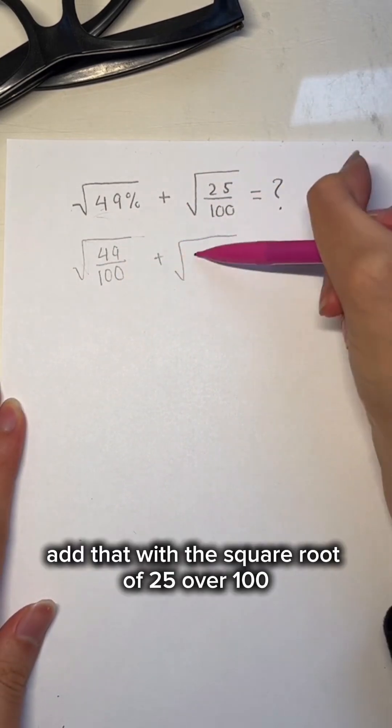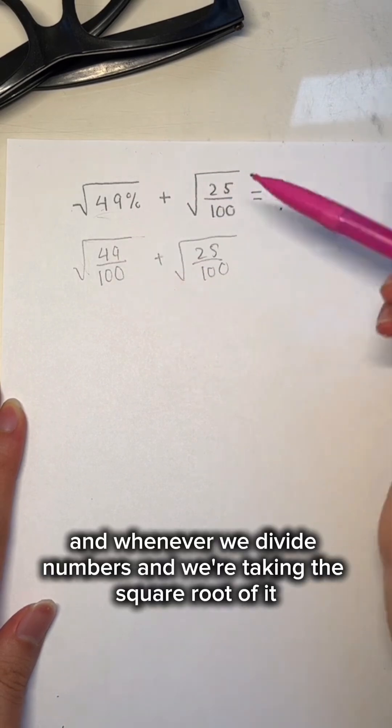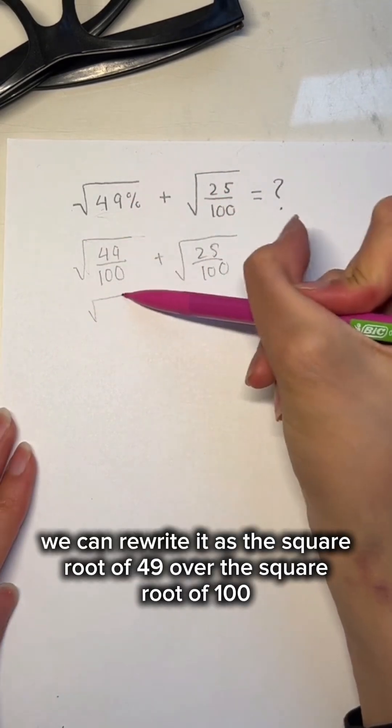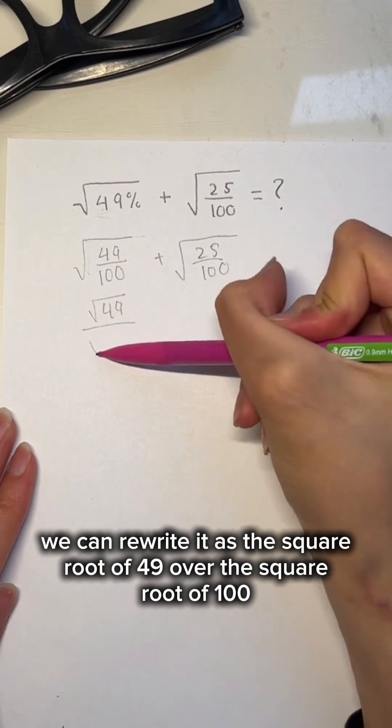Add that with the square root of 25 over 100. And whenever we divide numbers and we're taking the square root of it, we can rewrite it as the square root of 49 over the square root of 100.